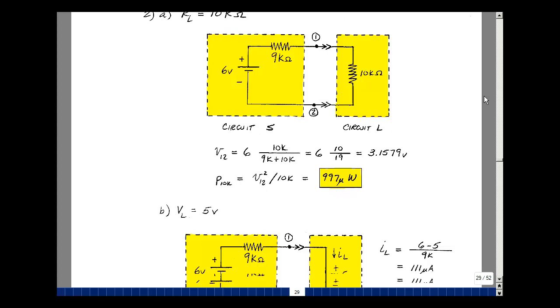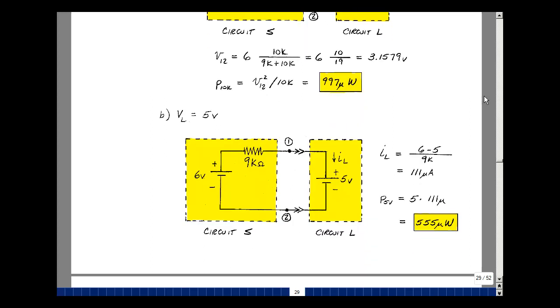Do the same problem with a different load. Again, we have a very simple circuit, one loop. With 5 volts here, we can find the current in this element by thinking of this as a common connection or ground. And the voltage across this element is going to be 6 volts minus 5 volts, and the current would then be that voltage divided by 9k.